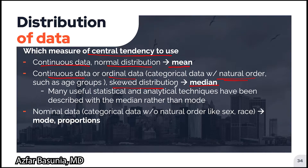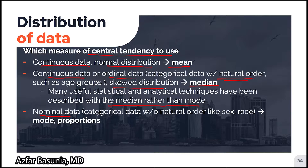You may be wondering why we use the median for a skewed distribution when the mode is the most resistant or robust. In this case, many useful statistical and analytical techniques have been described with the median rather than the mode, and that's why we use the median. If we have nominal data — which are categorical data without a natural order, such as sex or race of the patient — we use the mode or proportions.